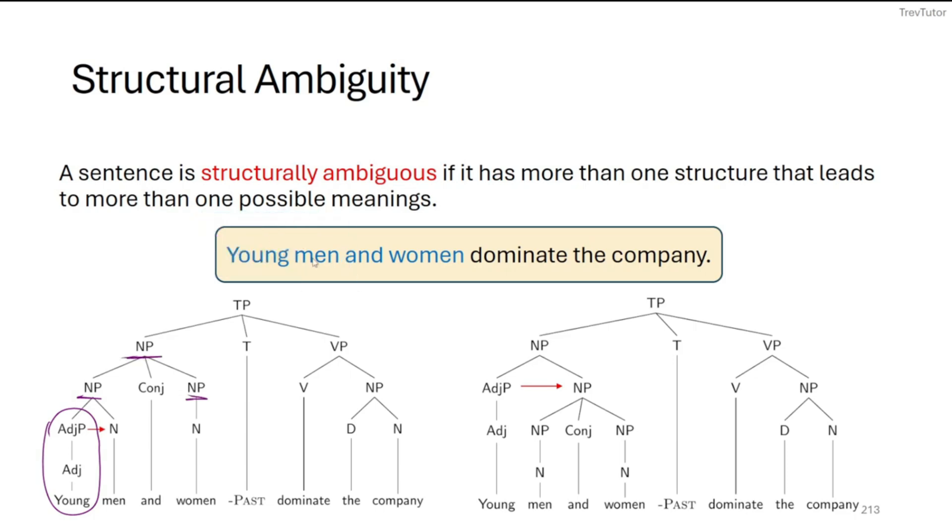But there's a second way that we can interpret this, and that is young is modifying both men and women. In which case, we want to form a conjunction for men and women first, and then we modify it with the adjective phrase.